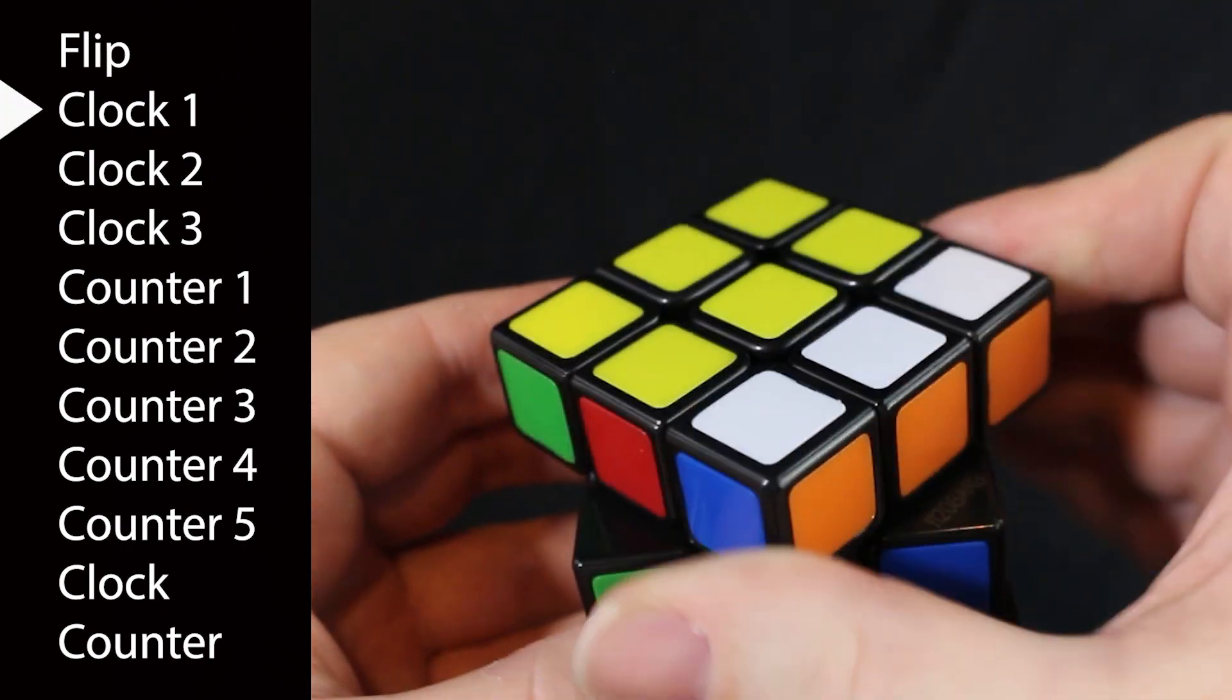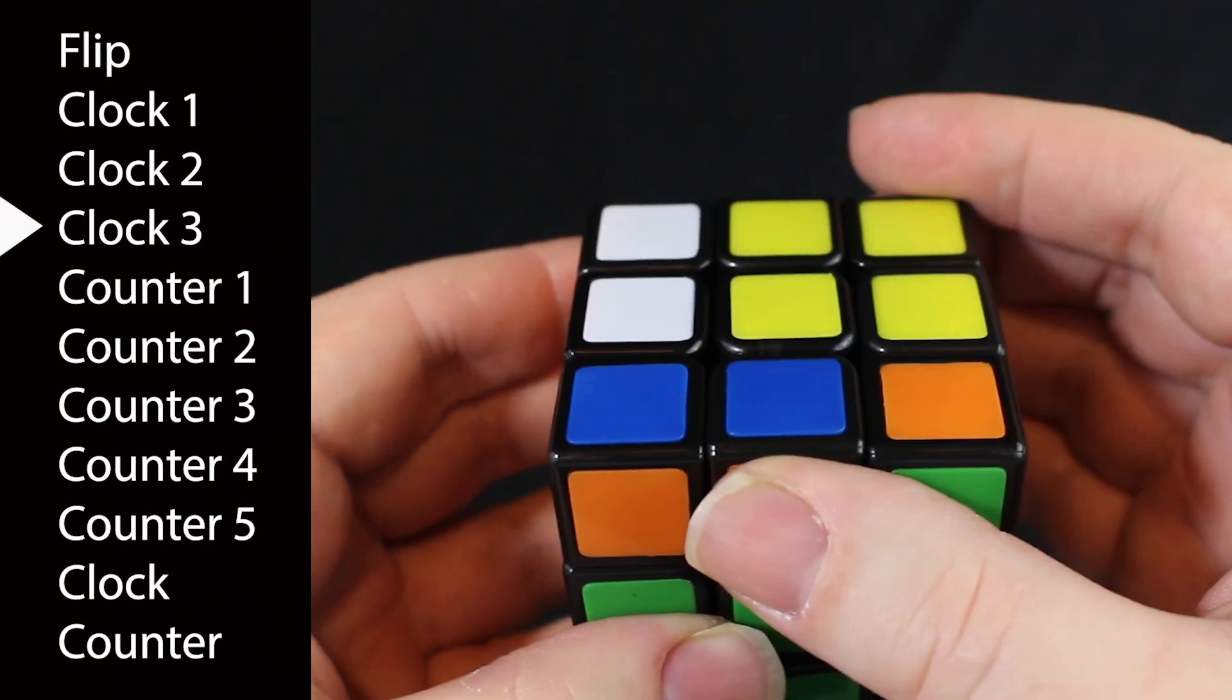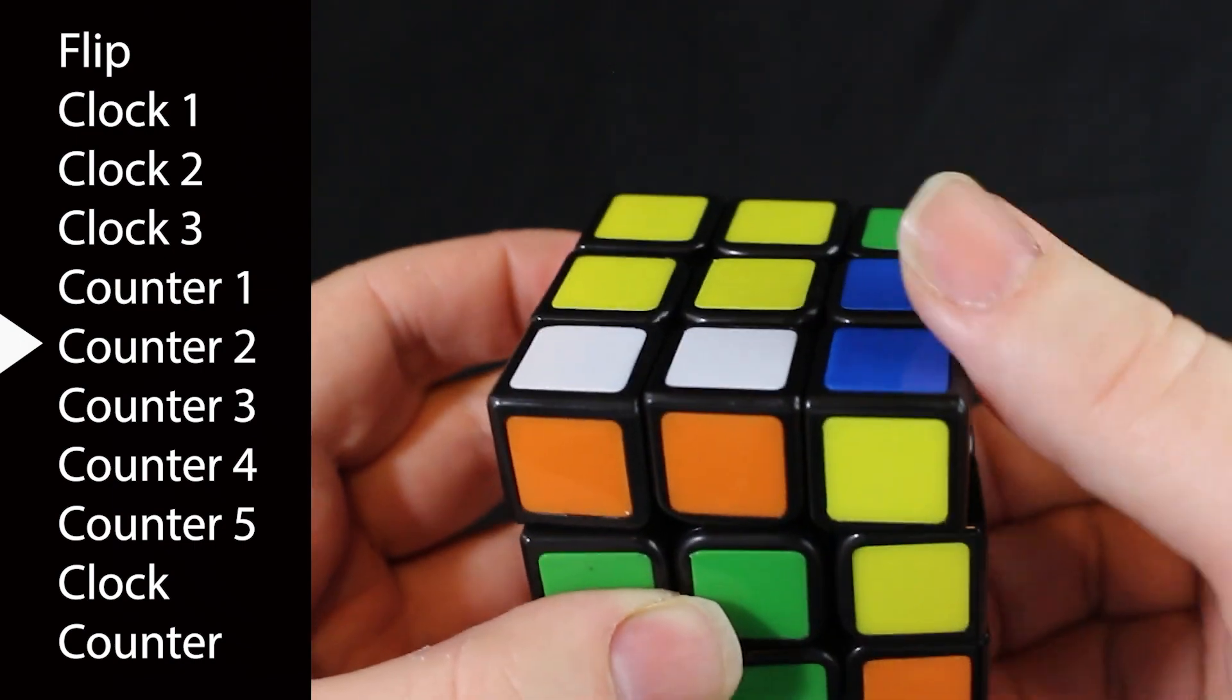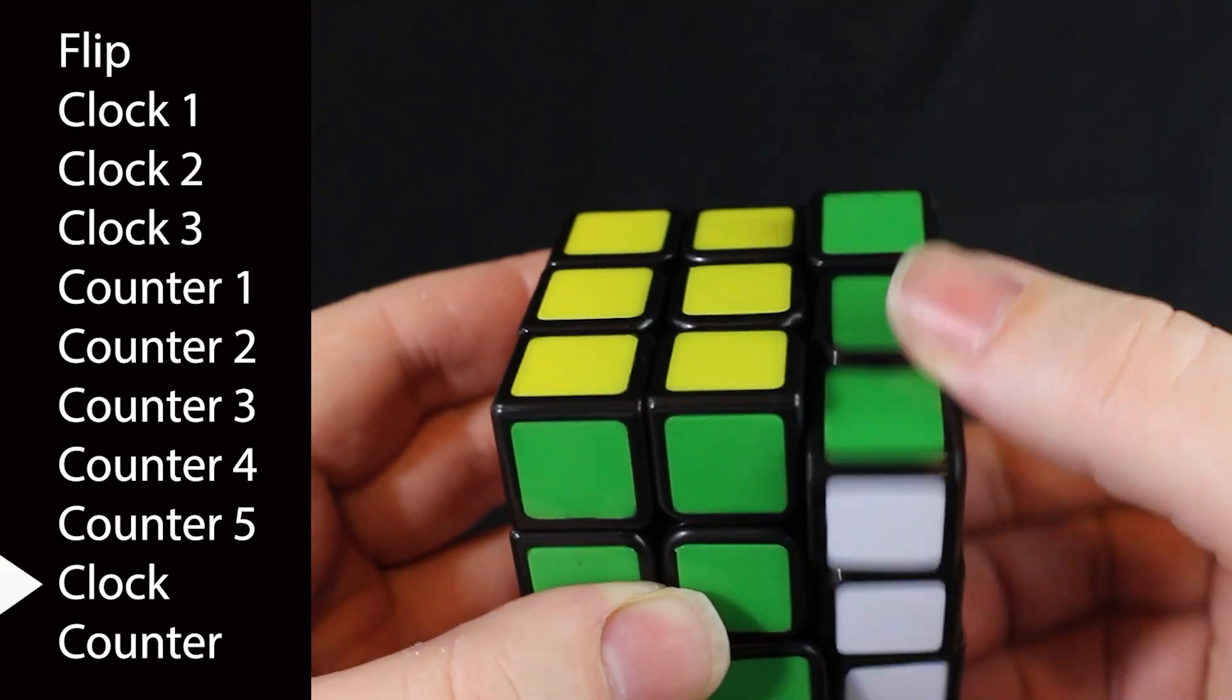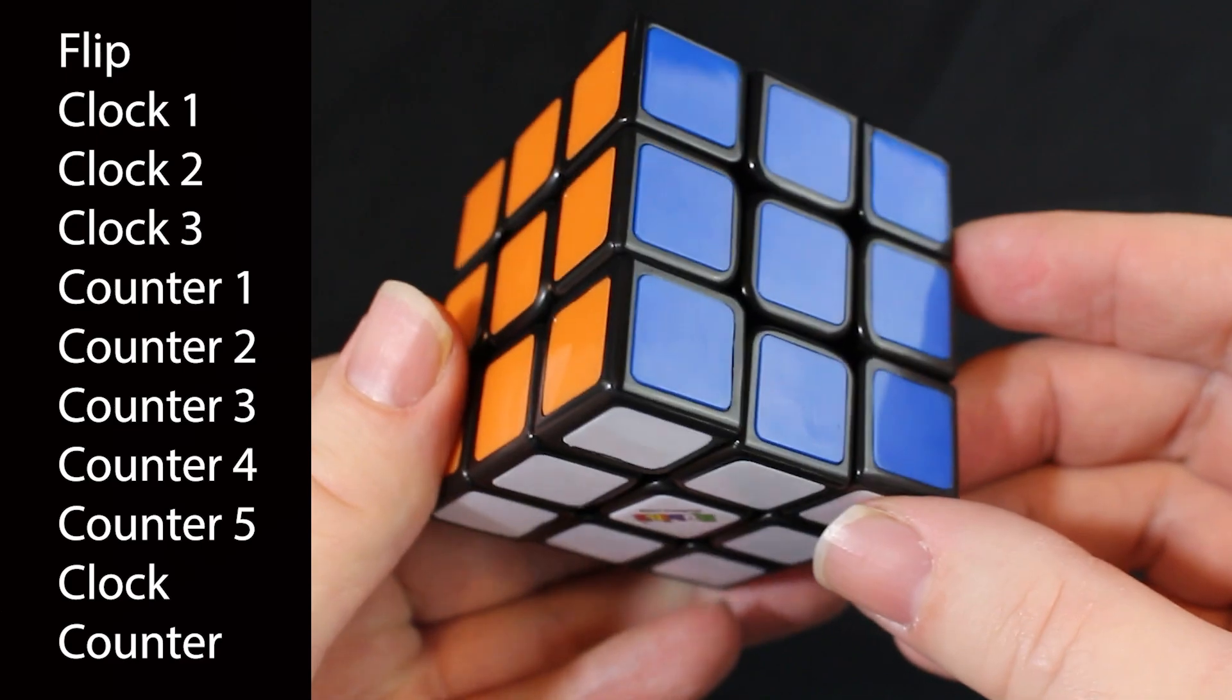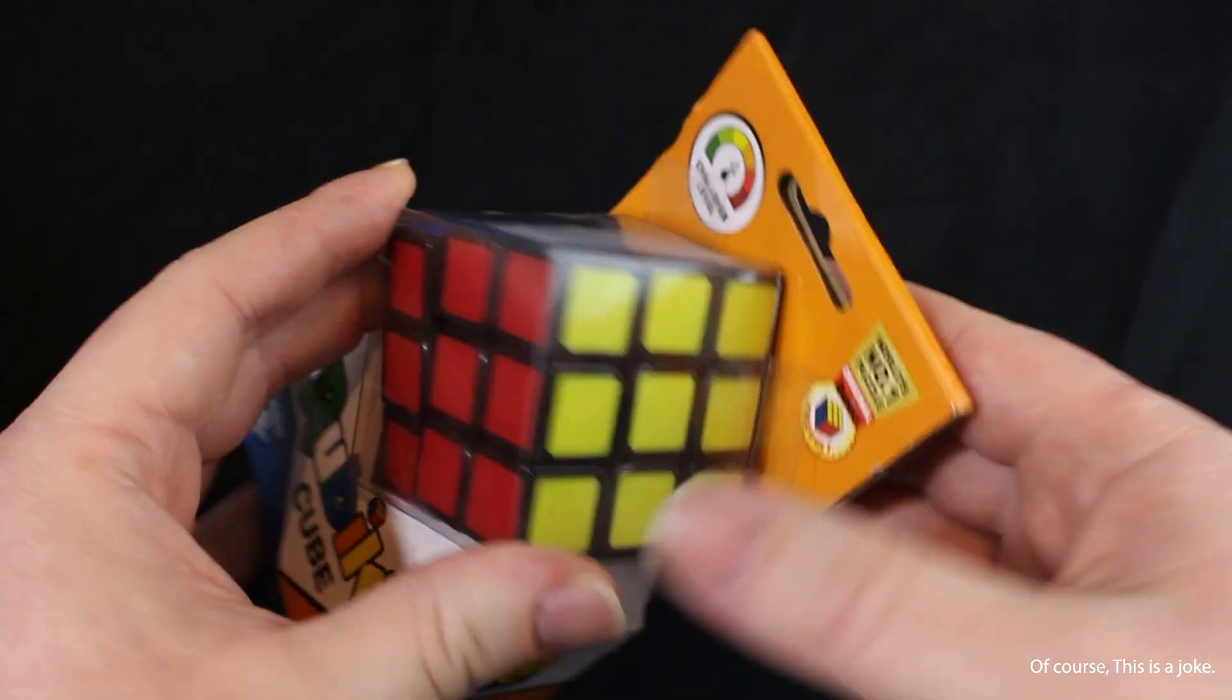Flip, clock one, clock two, clock three, counter one, counter two, counter three, counter four, counter five, clock, counter. There we go. And then we solved it. So now you can take it back to the store and say that you never used it and get your money back.